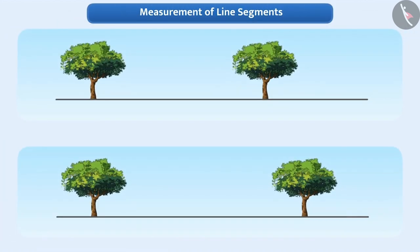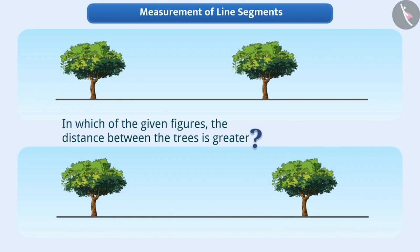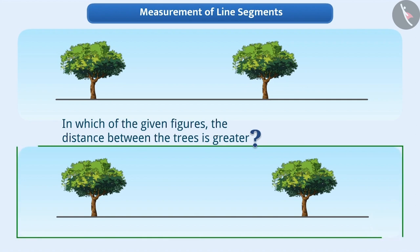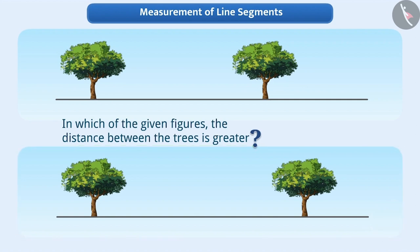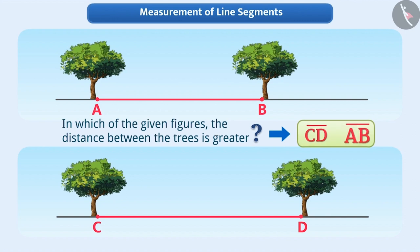The simplest method to compare any two line segments is comparison by looking. For example, look at the given figures. Can you tell me in which of the given figures the distance between the trees is greater? By looking at them, we can say that the distance between the two trees is greater in the second figure. Let's represent the position of trees by points A, B, C and D, and the distance between the trees by line segment AB and line segment CD. Then by looking at these line segments, we can say that line segment CD is greater than line segment AB.